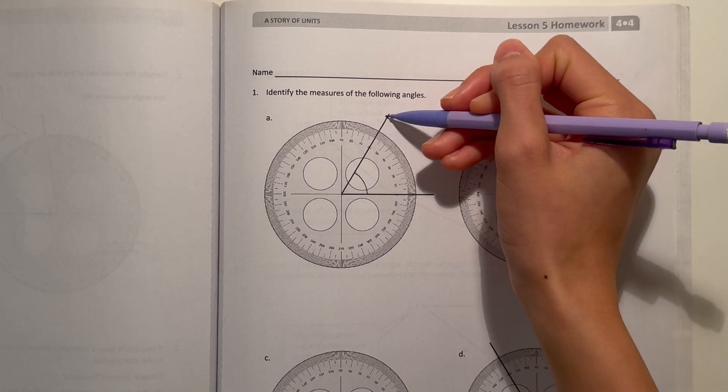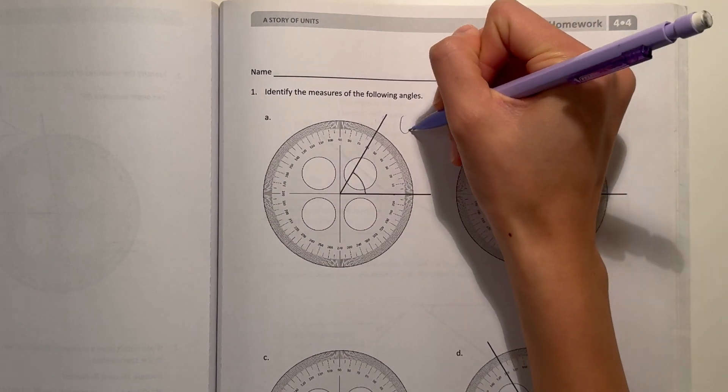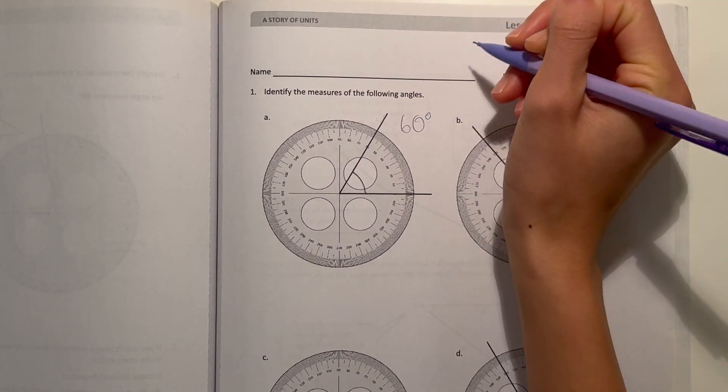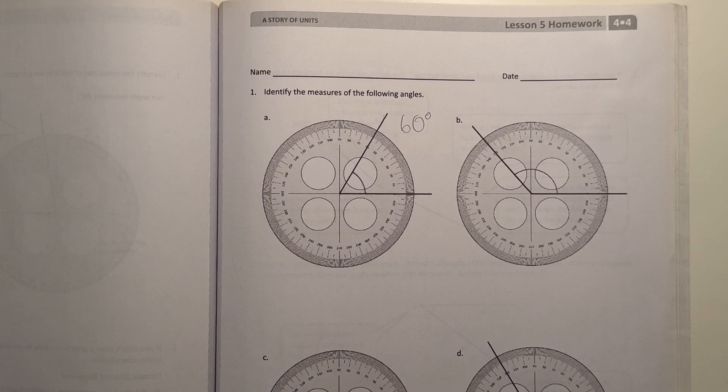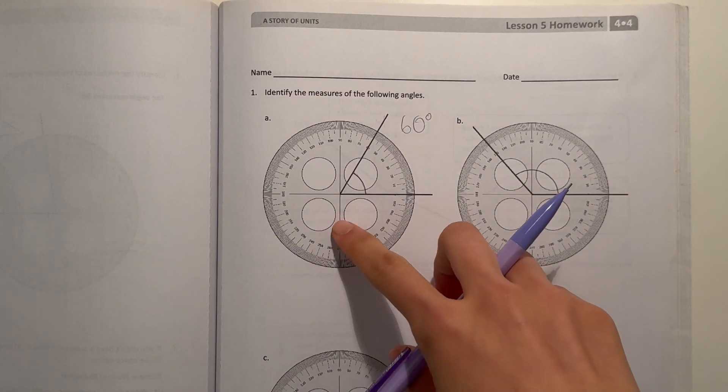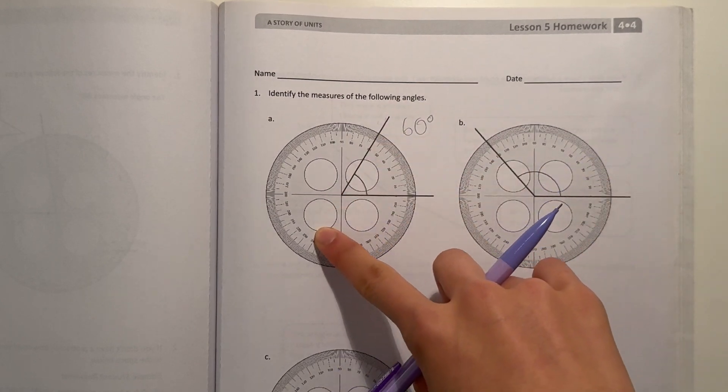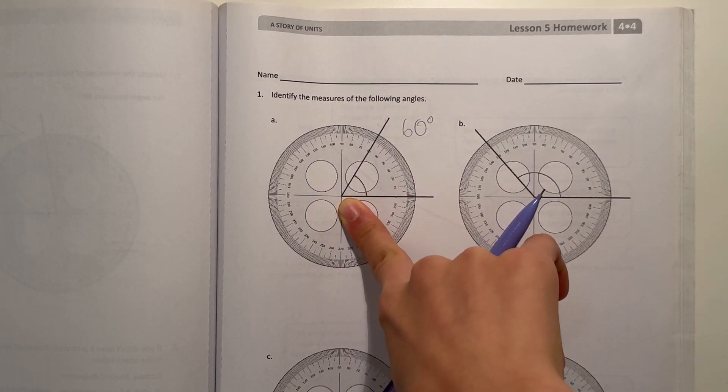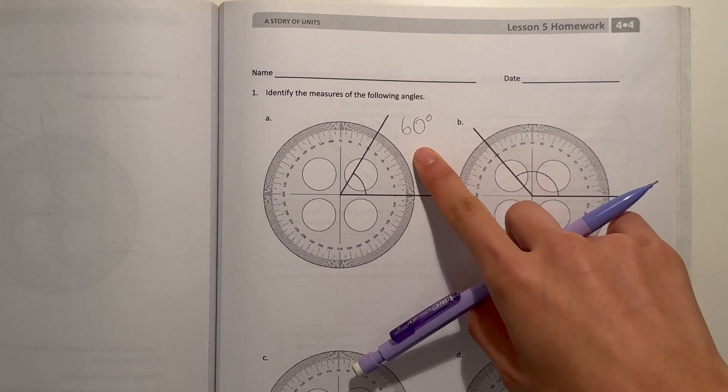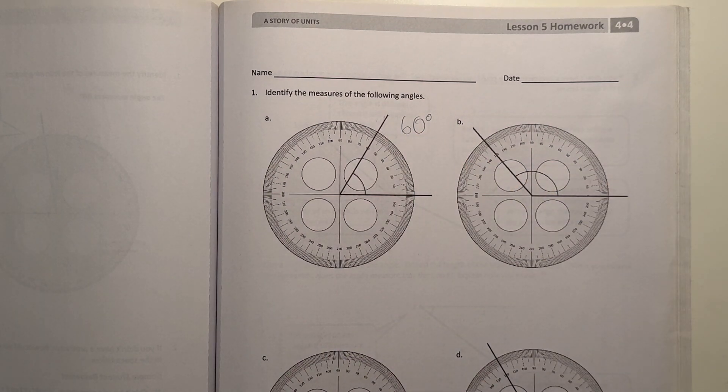So our angle ends right at 60, which means this angle is 60 degrees. Our angle measure makes sense because a right angle is 90 degrees, so since this is acute, it would be less than 90 degrees, and 60 is less than 90, so our answer makes sense.